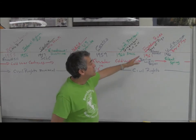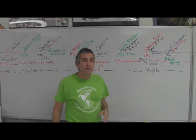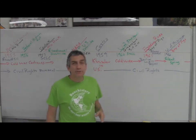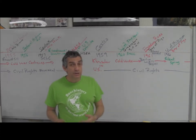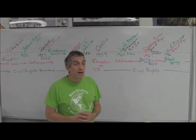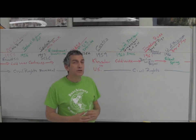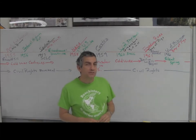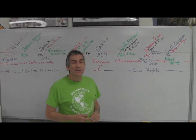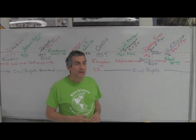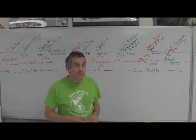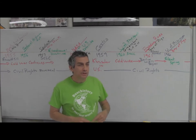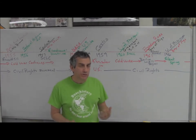In 1961, we're going to get freedom rides - an attempt to test segregation laws on interstate transportation. It's going to be northern activists riding buses through the segregated South to see what happens. It's going to end up as a disaster. Segregationists come out, they burn buses, it makes national TV, and it really inflames the situation.